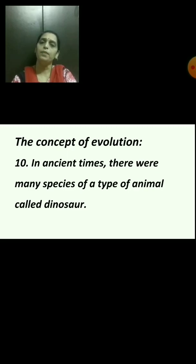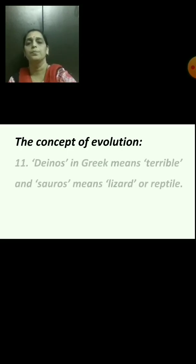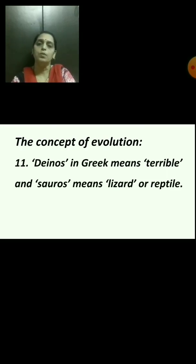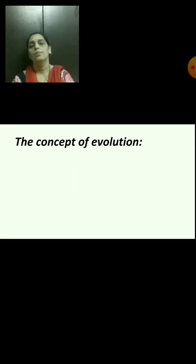In ancient times, there were many species of a type of animal called dinosaur. In Greek, 'dinos' means terrible and 'saurus' means lizard or reptile, so dinosaur means 'terrible lizard.' Some of these dinosaurs were enormous — meaning very large — in size.